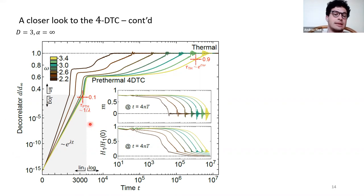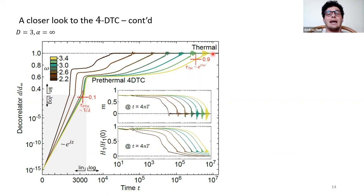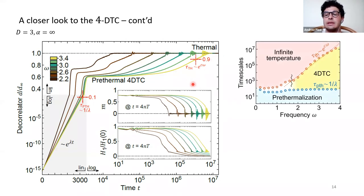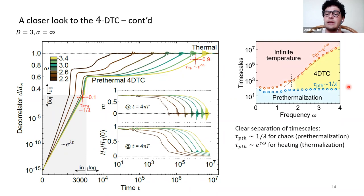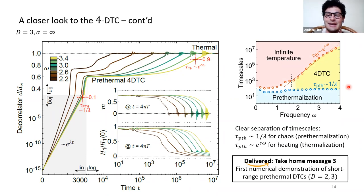Defining the pre-thermalization timescale as when the decorrelator crosses 10% of its infinite temperature value, and the thermalization timescale as when it crosses 90%, we can plot both versus frequency. The pre-thermalization timescale does not scale with omega, whereas the thermalization timescale does — exponentially. This clear separation of time scales provides evidence for the third take-home message: a numerical demonstration of short-range pre-thermal discrete time crystals requiring dimensionality two or three.